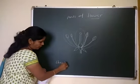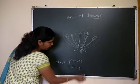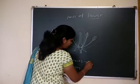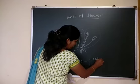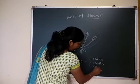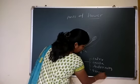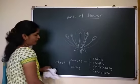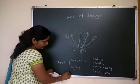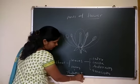Shoot consists of leaves and stem. So here in a flower, leaves are modified to form calyx, corolla, androecium and gynoecium. While the stem is modified to form the thalamus or receptacle.